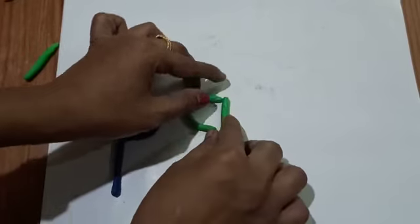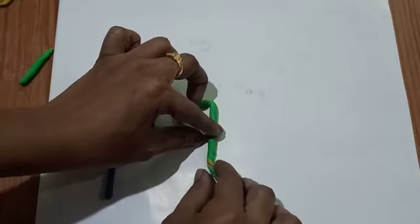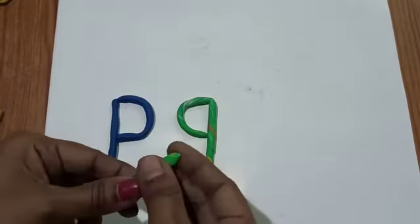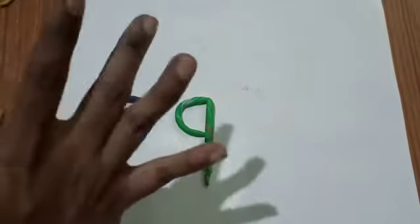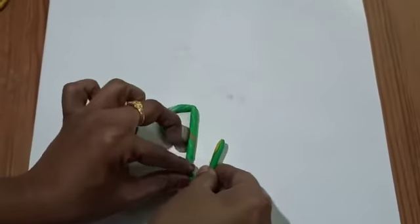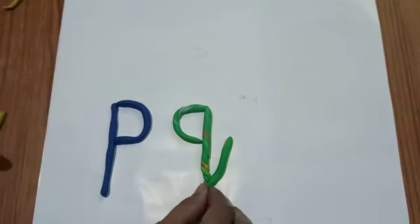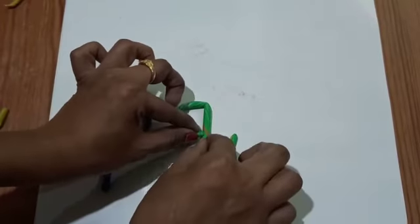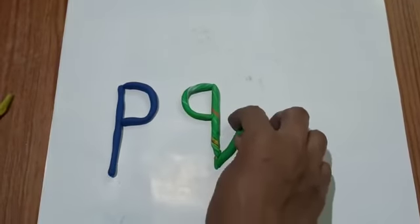Then one standing line, then again one slanting line towards upper. I am going to join this. What is this? This is the letter Q, small q.